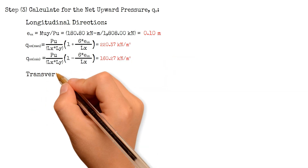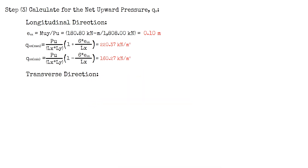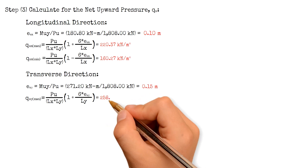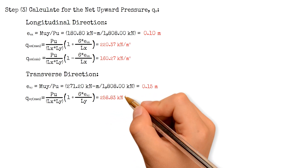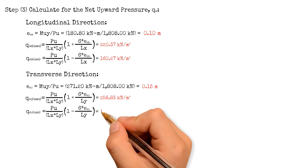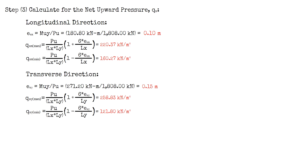Doing the same process for the transverse direction, the maximum net upward pressure Q_Uy_max equals 258.83 kN per m² and the minimum net upward pressure Q_Uy_min equals 121.8 kN per m².